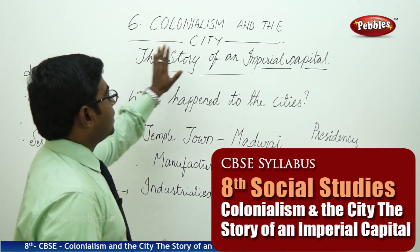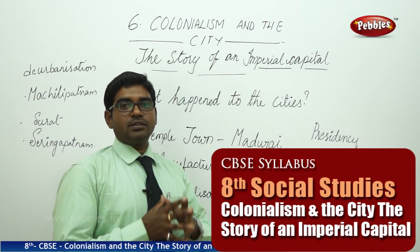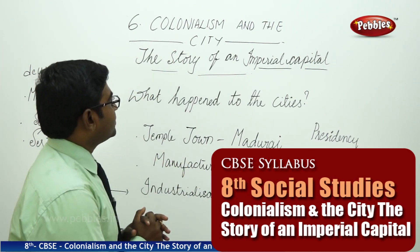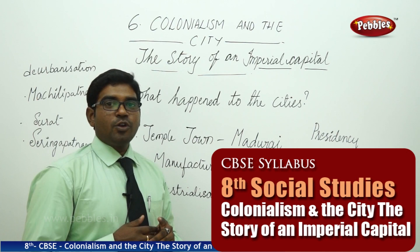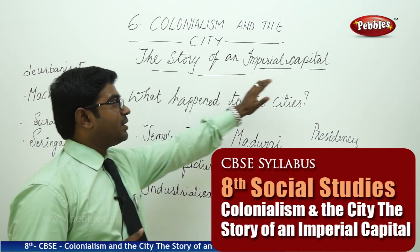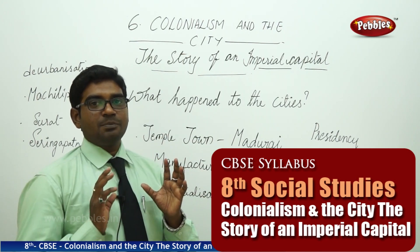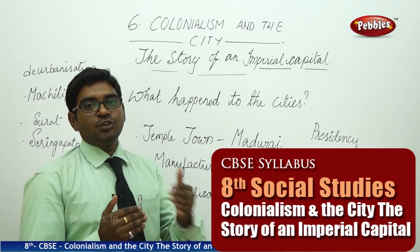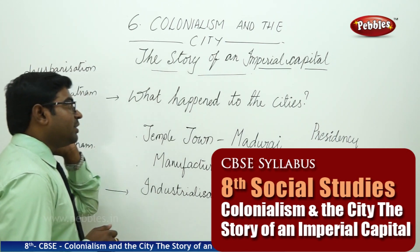Chapter 6: Colonialism and the City. In this chapter we are going to discuss the story of an imperial capital — how was the capital built, and what happened to the capital during imperial rule? Now moving on into the details.